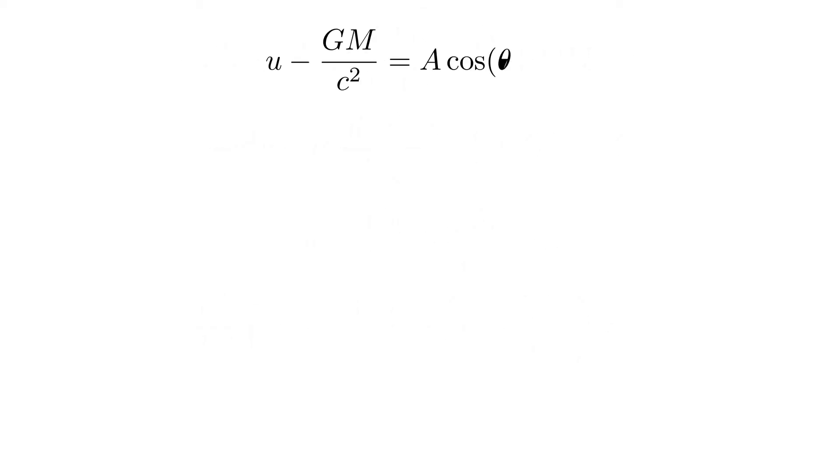We finally get u minus GM over c squared equals A cosine theta minus phi. Rearranging and plugging back u equals 1 over r, we get that r equals c squared over GM over 1 plus A c squared over GM cosine theta minus phi.